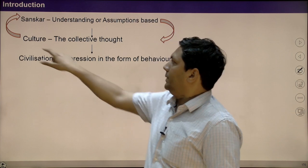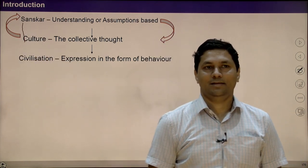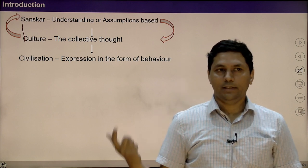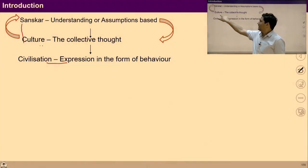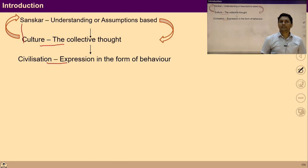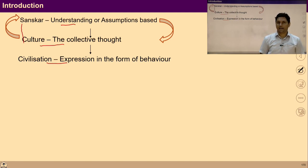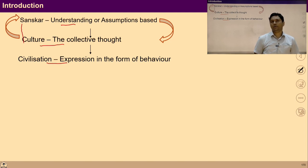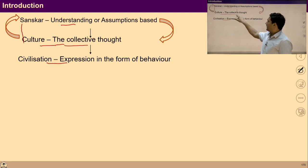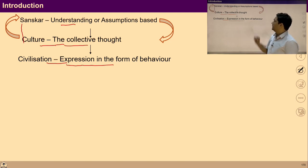Sanskar and culture are basically interrelated to each other. At the core of civilization is culture, and each culture is based on what has been understood or assumed about reality — that is sanskar. If we are talking of an individual human being, then we are talking about sanskar. When we are talking about combined or collective living, collective thoughts are culture.